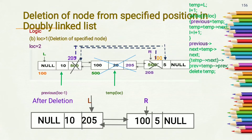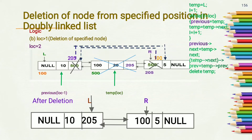If the doubly linked list is not empty and the value of location is other than 1, that means we want to delete a specified node. Suppose we want to delete the node at location 2 — the second node. We have to update the next pointer of the previous node and the previous pointer of the next node so that these nodes will point to each other.